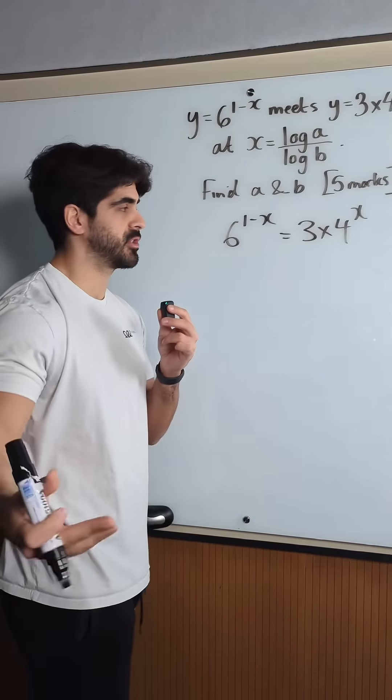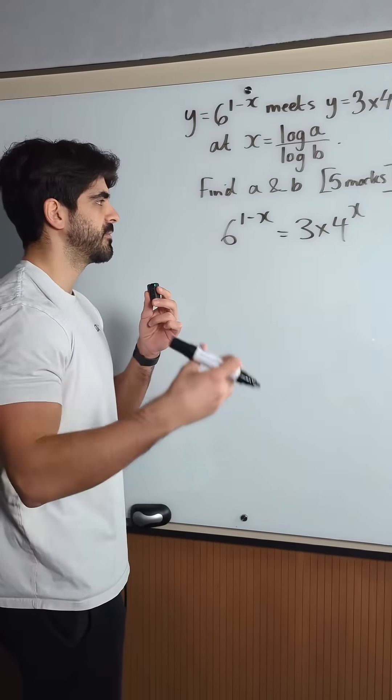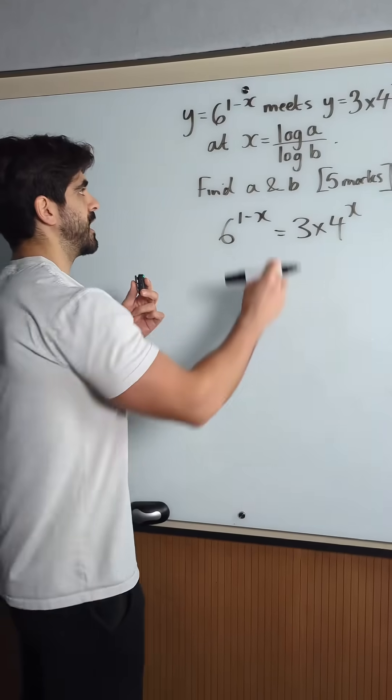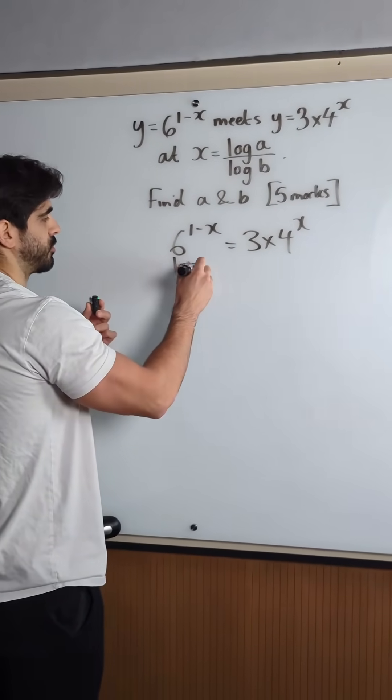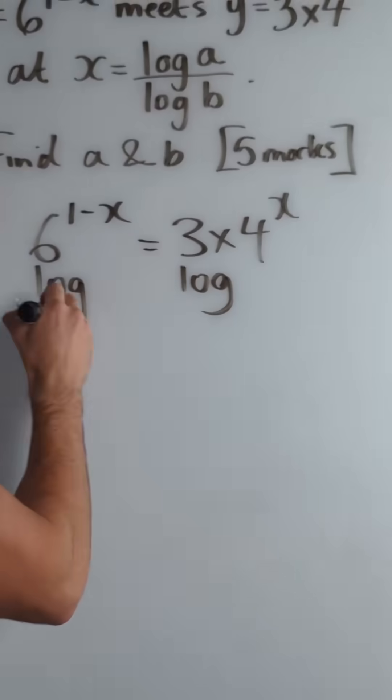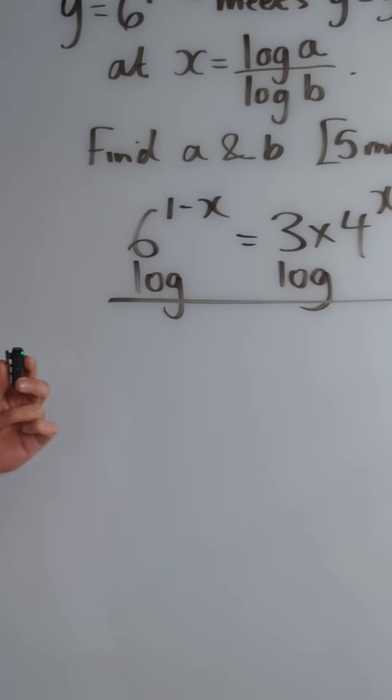you take log base of something that would just cancel out one of these. So I would have done log base 6 because that would just get rid of this and you need to use less log rules. But here they're just using log which is log base 10, so we're just going to do what the examiners want us to do.